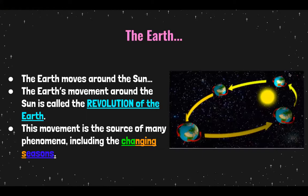So the Earth moves around the sun. Where have we heard this whole idea about the Earth moving around the sun? We only studied that for weeks, right? The Earth's movement around the sun is called the revolution of the Earth. So what's the path that it's on? I hope you said orbit.